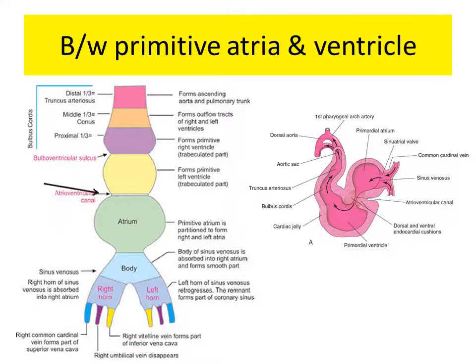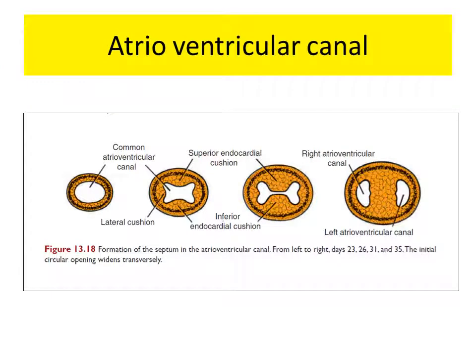Now between the atrium and the ventricle, at the AV canal, the following changes are observed. The common atrioventricular canal is oval in shape. Now four bulges are seen: two lateral, one superior and one inferior. The superior and inferior outgrow the lateral and they fuse with each other to form the AV cushion, dividing this canal into right and the left half.